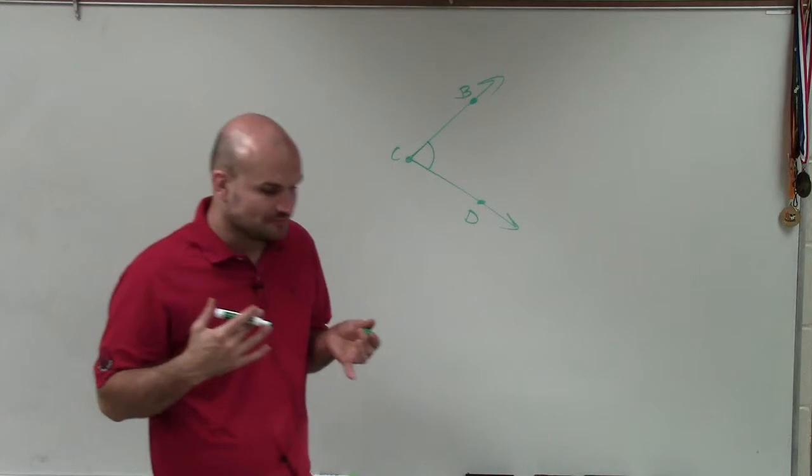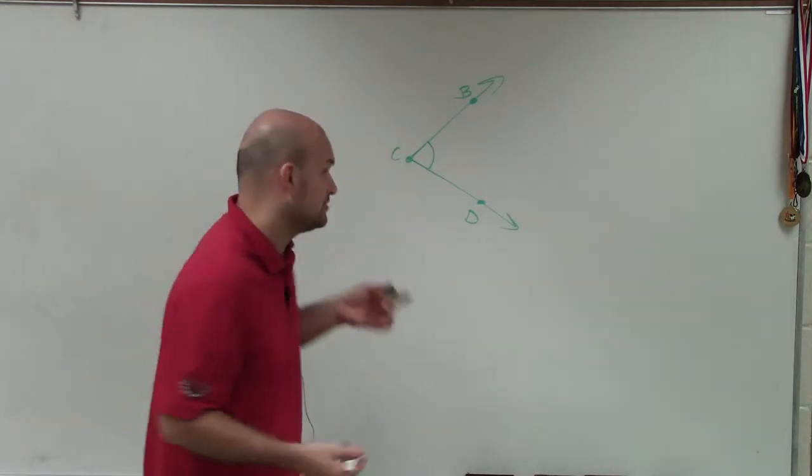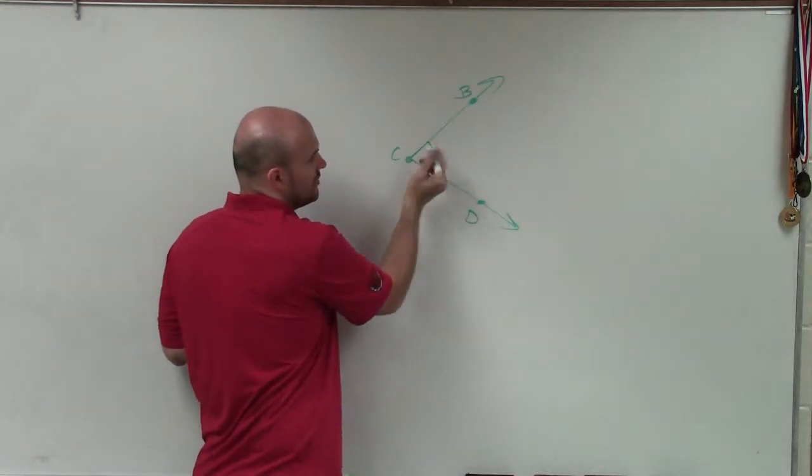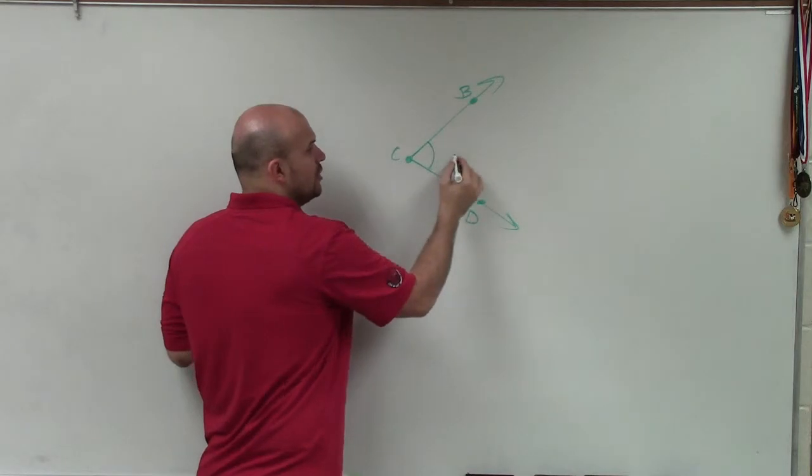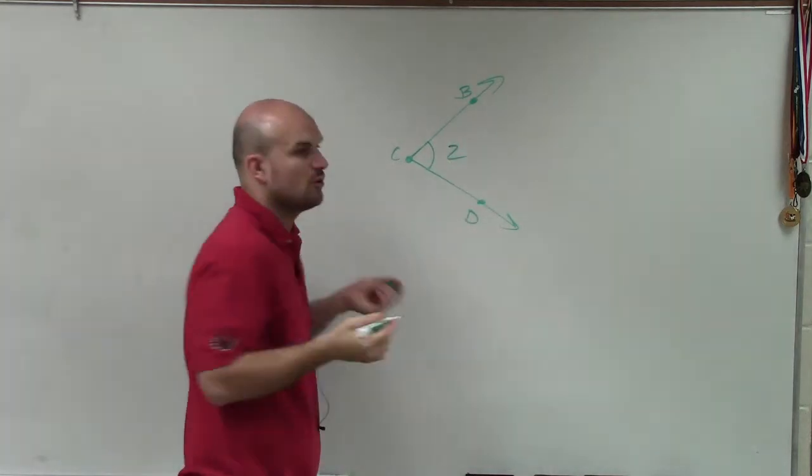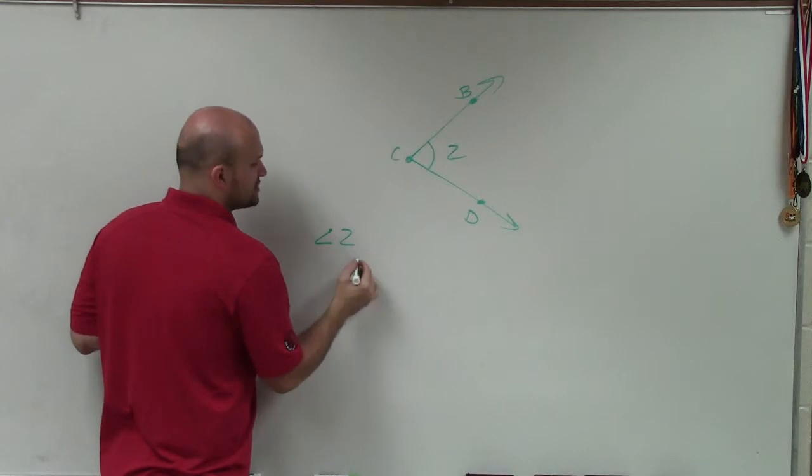There are a couple of different ways that we can label our angles. Sometimes on the inside of that arc that shows the rotation, we'll have numbers, like the number two or one. So we can label the angle as angle number two.